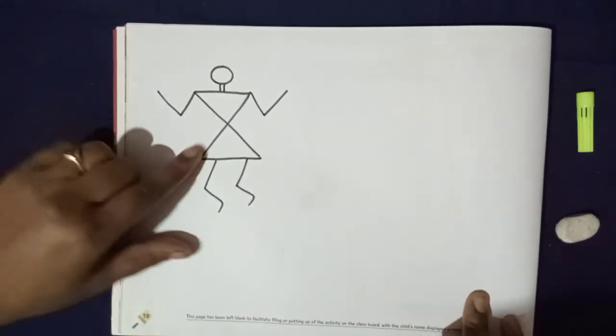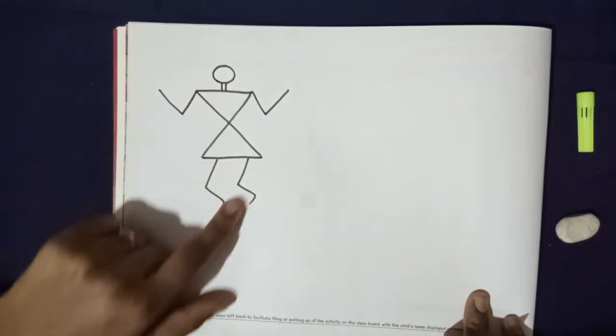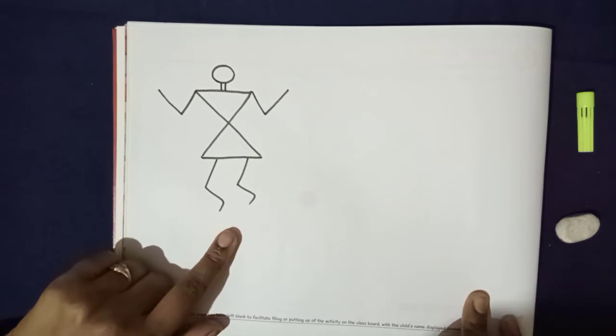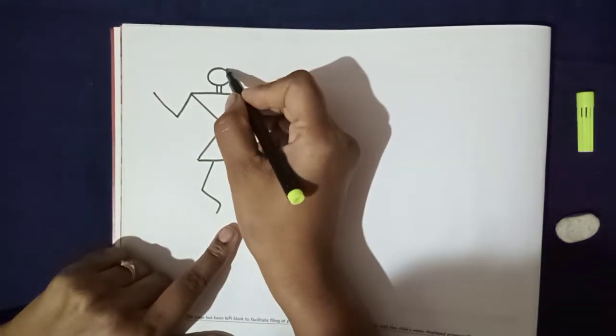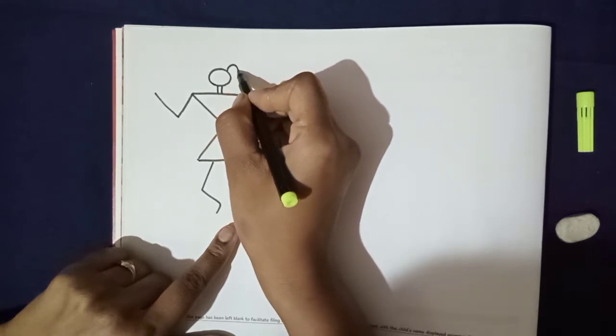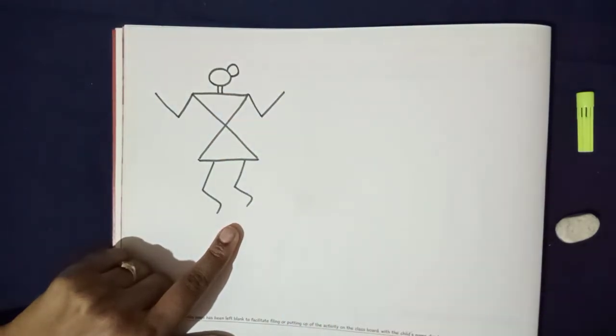So children, in Warli painting, we will draw a boy. If we draw a girl, then we will put one more circle here. See, this is a girl.